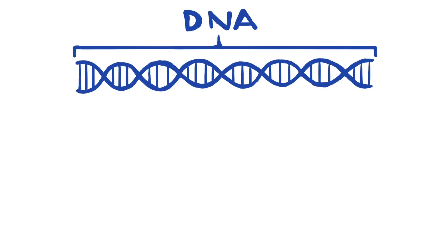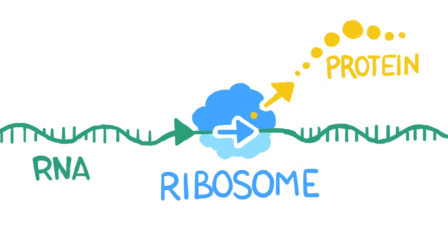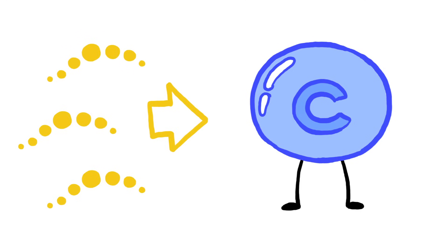Genes in DNA are expressed when they're read and transcribed into RNA, which is translated into proteins by structures called ribosomes. And proteins are much of what determines a cell's characteristics and function.